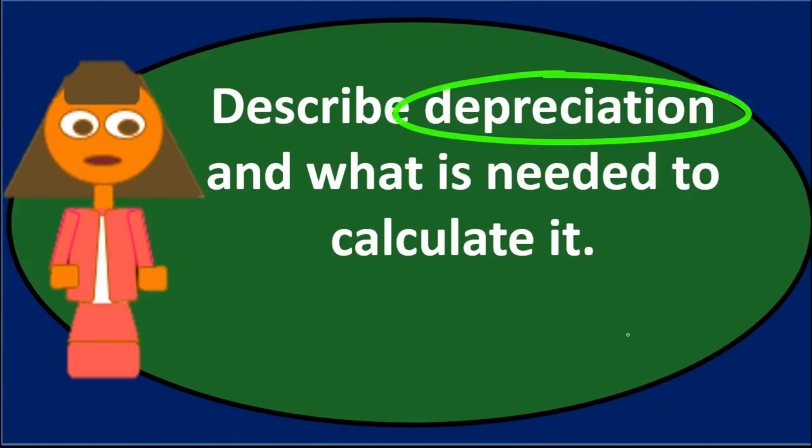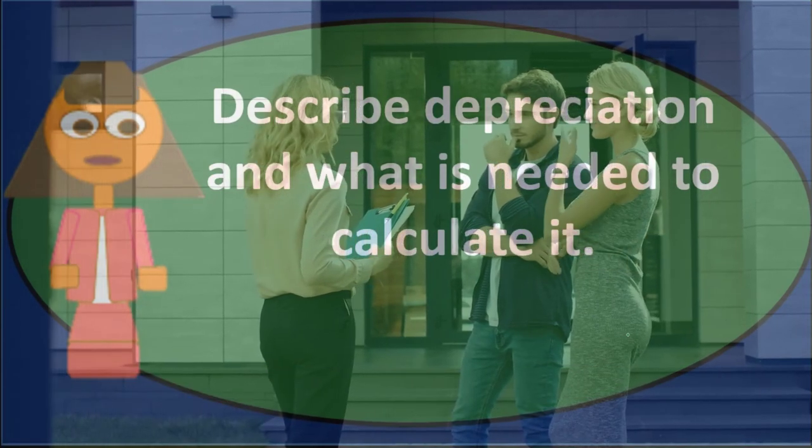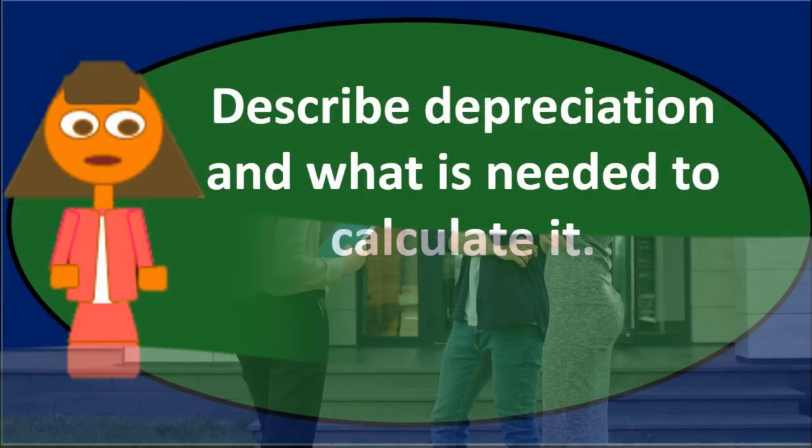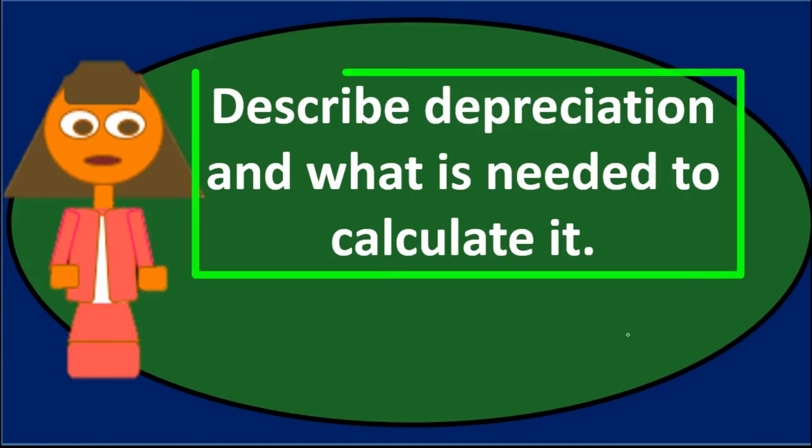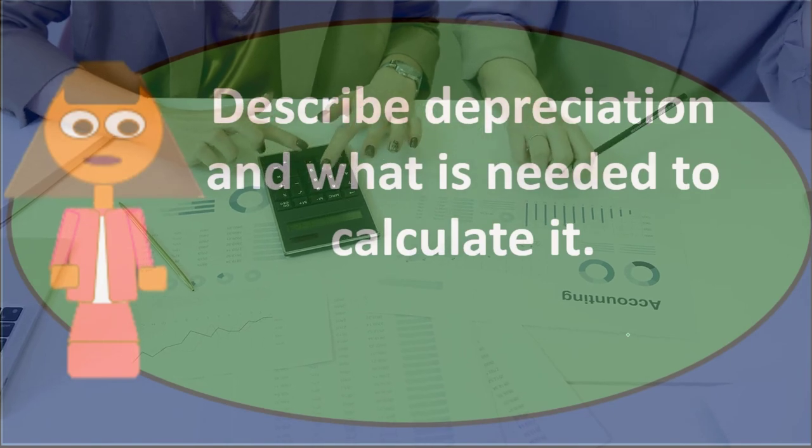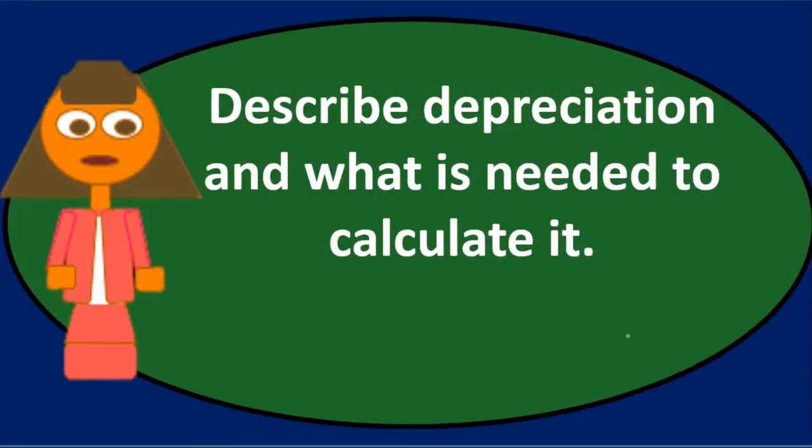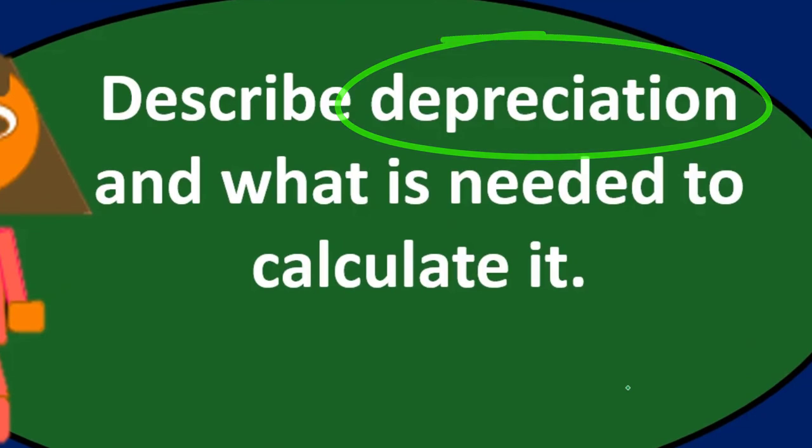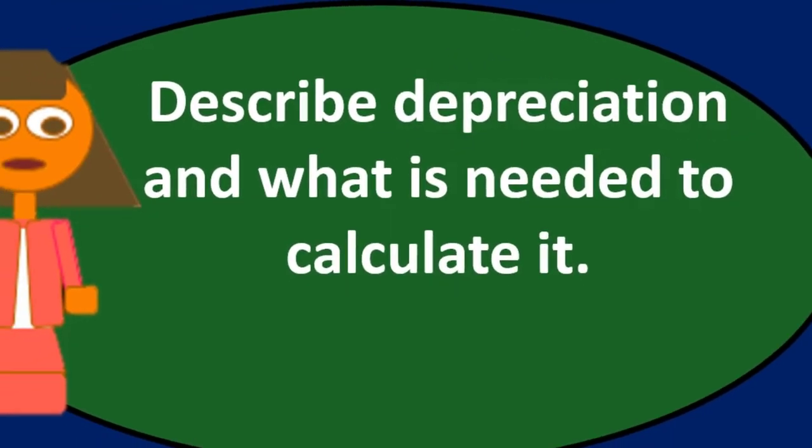To calculate depreciation we're going to need a few different factors. We're going to need to know the cost of the equipment, the useful life of the equipment, and the salvage value. We could use a few different ways to calculate depreciation: straight-line method, some accelerated method like double declining balance method, or a units of production type method.